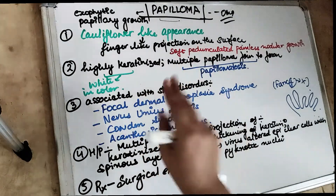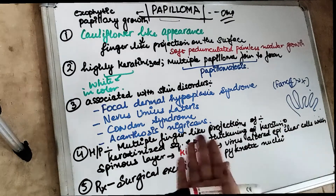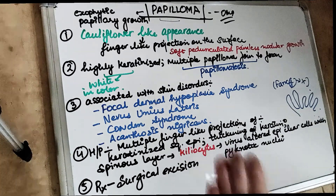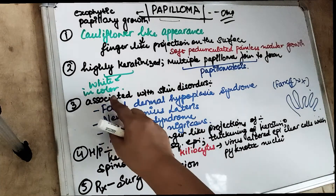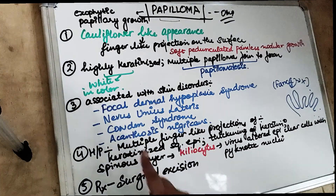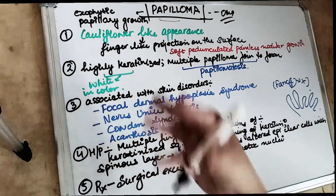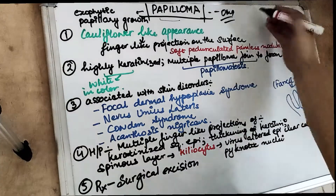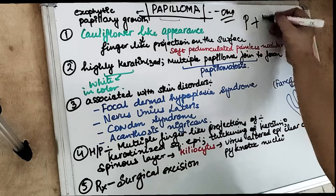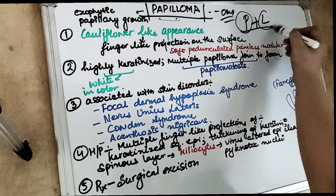These papillomas are white in color. How do they develop? They are thought to develop from the human papilloma virus — HPV. However, most investigators say it is derived from HPV but the real reason is still unknown. As for location, remember 'P plus L' — papilloma occurs on the palate as well as on the lips.